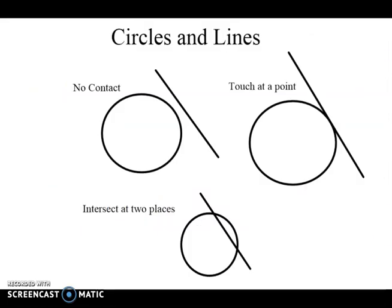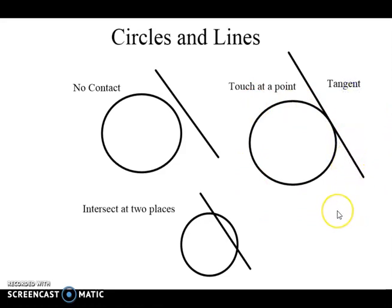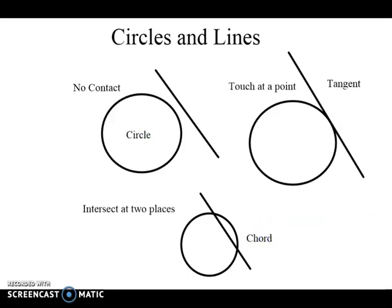Before we continue, when we work with circles and lines there are three things that can happen. I can have a circle and a line where there is no contact. I can have a circle and a line where they touch at a point — we call this a tangent. Or, we get a circle with a line that touches at two points, cutting the circle at two points. This part is known as a chord.